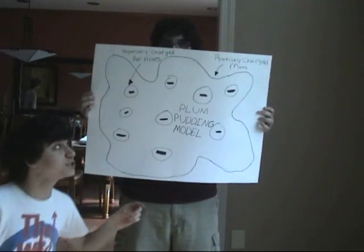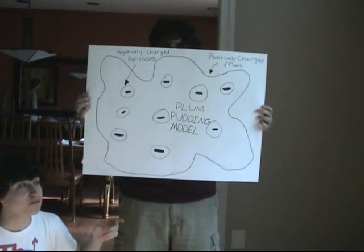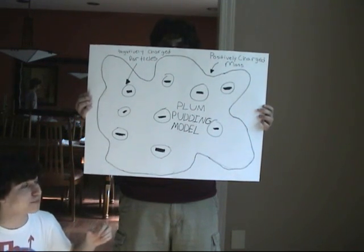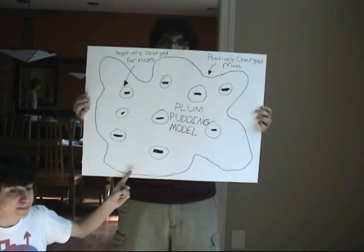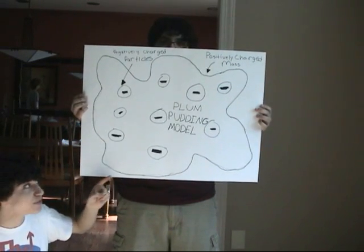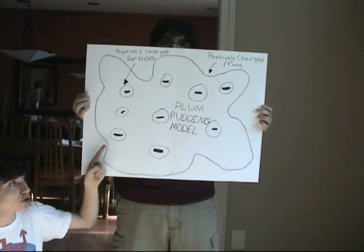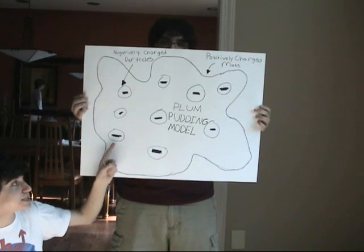Alright, so before Rutherford's Gold Foil Experiment, scientists used the Plum Pudding Model. Here I have a representation of the plum pudding model of the atom, which consists of this blob, which is a positively charged mass, and scattered within are these negatively charged particles, represented by these circles with minus signs in them.